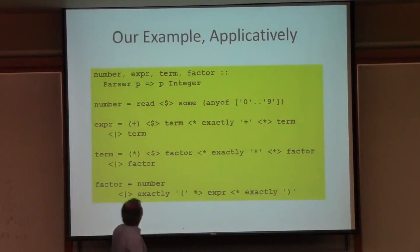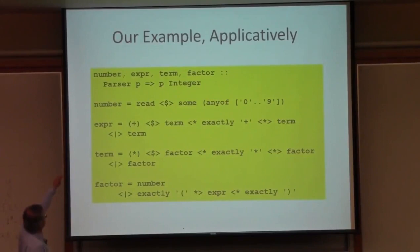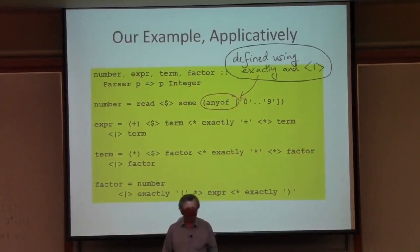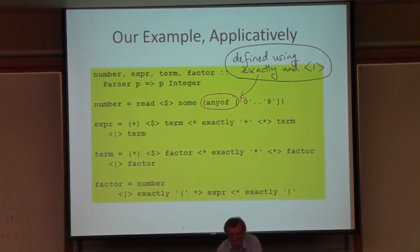Here is the parser once again, now expressed in terms of the applicative functor interface. There are two differences. For a start, I'm now only using the exactly operation, so I'm only looking for exact tokens, just as a simplification. I actually need to add those type signatures up at the top, otherwise the compiler will not accept these definitions anymore. There's an anyof function in there which I'm using now to recognize digits. anyof is easier to define — I just map my exactly function over that list of characters and then combine the results using fold of the alternative. My parser still looks very nice and simple.